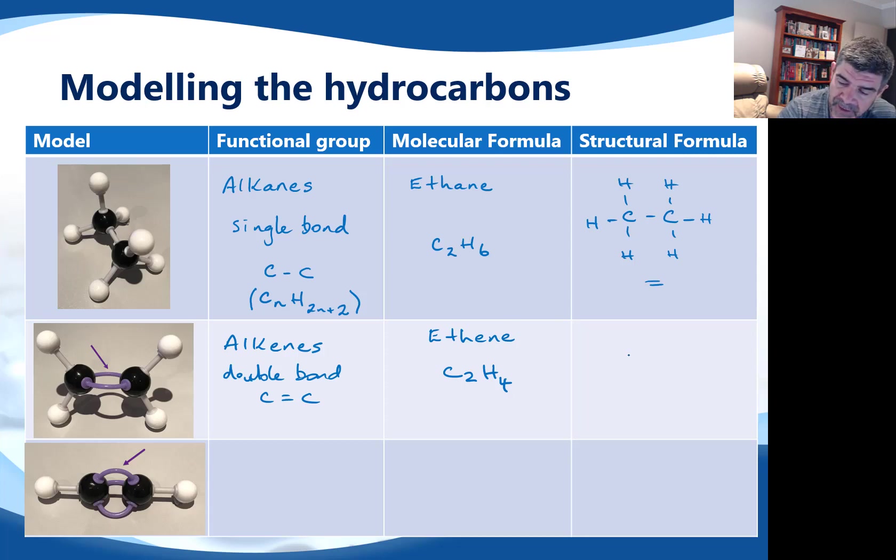If I draw the structural formula, I have my two carbons joined with a double bond, and I just show two hydrogens coming off each of these two carbons, in order to make sure that I have four bonds all together. The general formula for the alkenes is CnH2n. You remember, when we put the double bond in, we took two hydrogens out, and so therefore we've reduced the total number of hydrogens by two. So the general formula for alkenes is CnH2n.